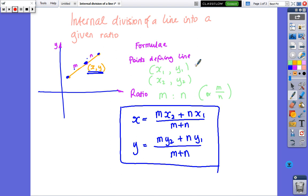So, here's the formula. The first point is x1, y1, the second point is x2, y2, the ratio is m to n, or m over n, and this point that we're trying to find is given by this formula.